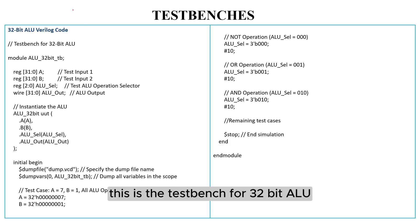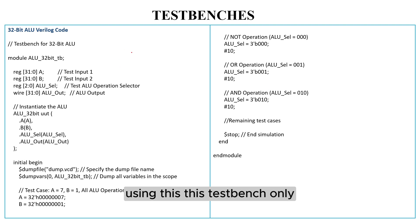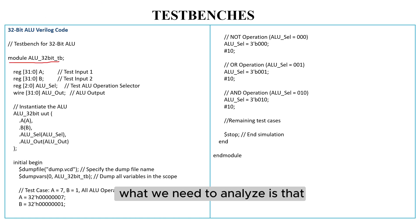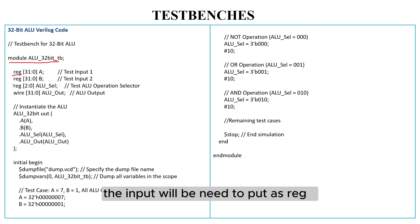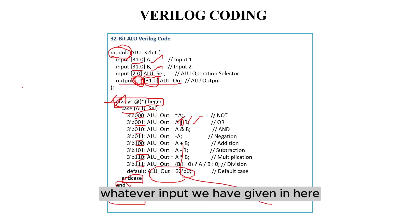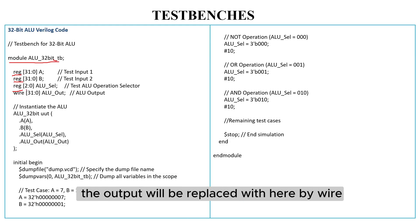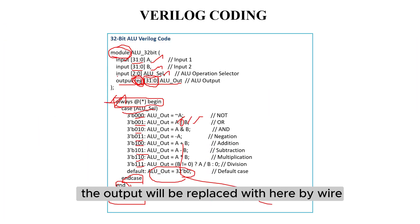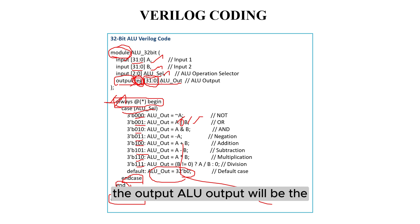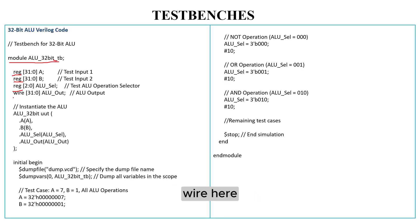This is the test bench for the 32-bit ALU. We first need to verify the Verilog block using this test bench. This is also written as a module. What we need to note is that the inputs will be declared as reg here. Whatever inputs we have — A, B, ALU selection — will be declared as reg. And the output will be declared as wire. Here the ALU output will be the wire.